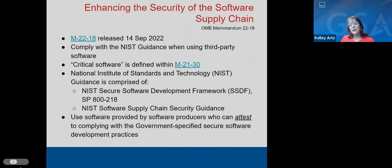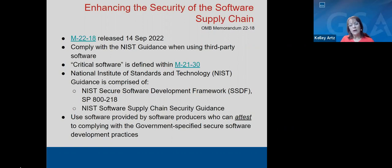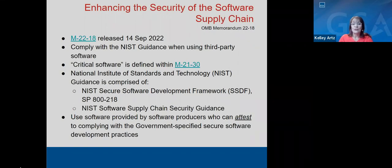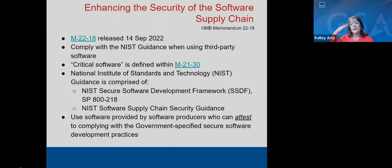In addition, there is an OMB memo, M-22-18, released just a few weeks ago. It calls on government agencies to comply soon with specific timelines, and it is public-facing on the White House website. It requires agencies to comply with NIST guidelines for using third-party software, with a specific call-out for agencies that make available government-wide vehicles such as the Federal Acquisition Service. Software producers will be required to attest that they are complying with secure software development practices as defined by NIST in M-22-18.